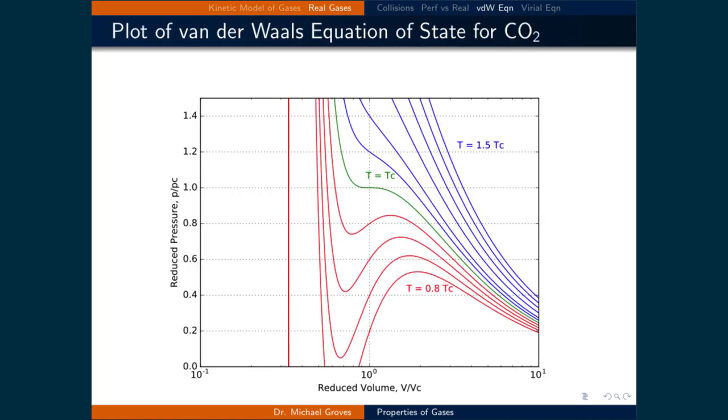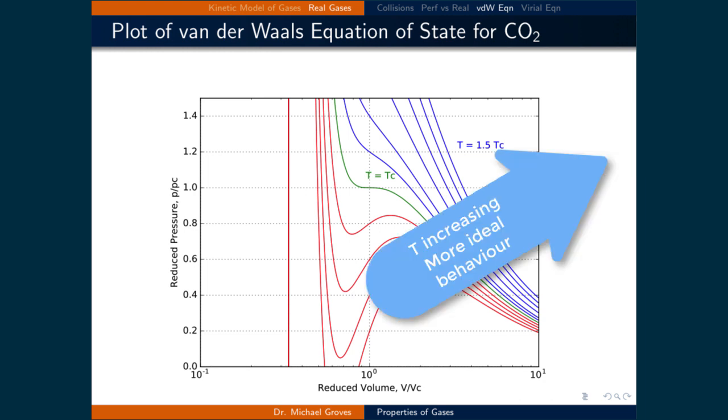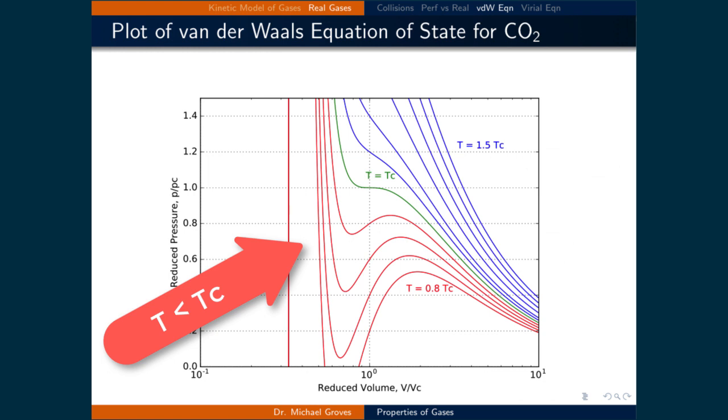There are isotherms that are colored in blue. These ones have a temperature higher than the critical temperature of the gas. Recall that the critical temperature is the temperature at which the critical point occurs. As the temperature increases away from the critical temperature, these isotherms will look increasingly ideal.